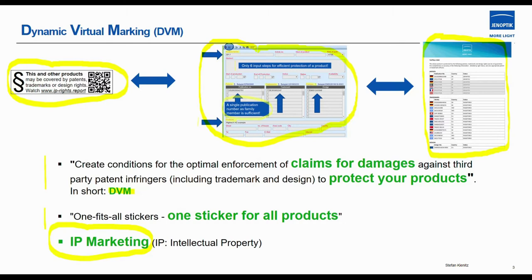DVM stands for dynamic virtual marking. The motivation is about an indirect but very efficient copy protection of your products — through pain of the patent infringer in the form of damage compensation. However, for this you must first construct a claim for damages. IP marketing is one of my favorite topics in connection with dynamic virtual marking, and I will present a separate podcast on it shortly.